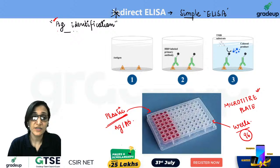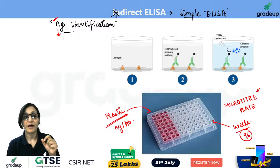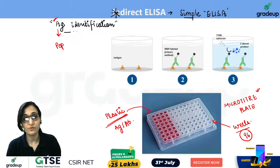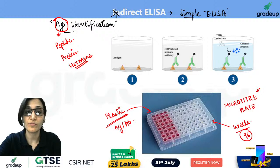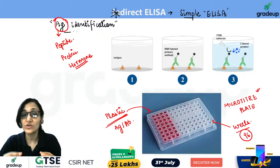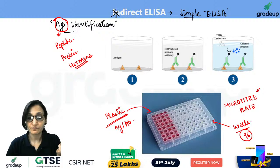Here, antigen identification is happening. What is the nature of this antigen? The antigen can be a peptide, protein, or hormone — any such biomolecule. The antigen's nature can be protein, peptide, or hormone. Now, from where does this antigen come?